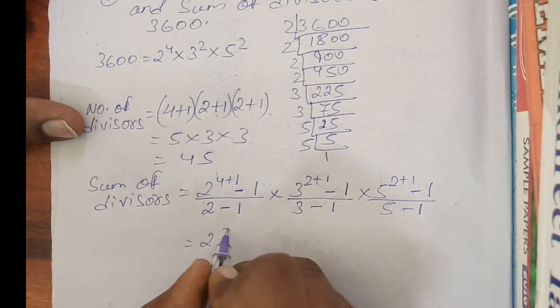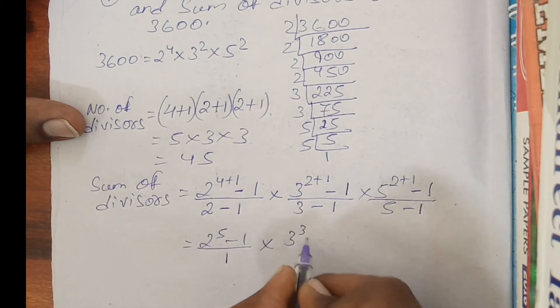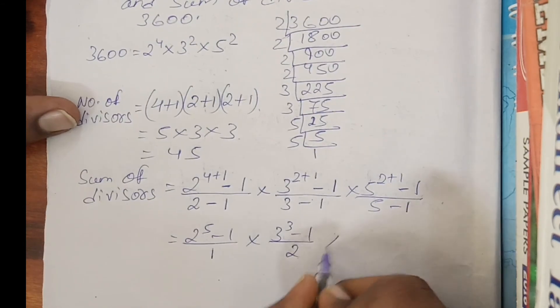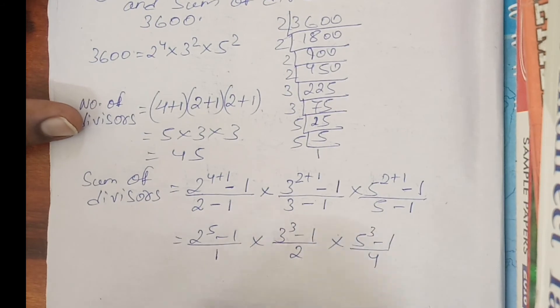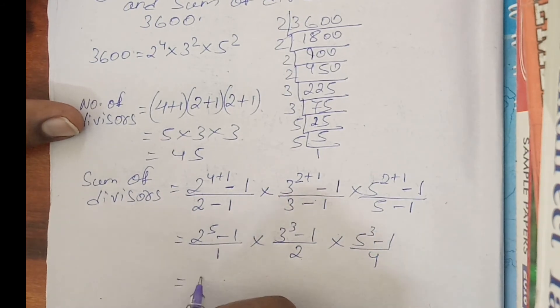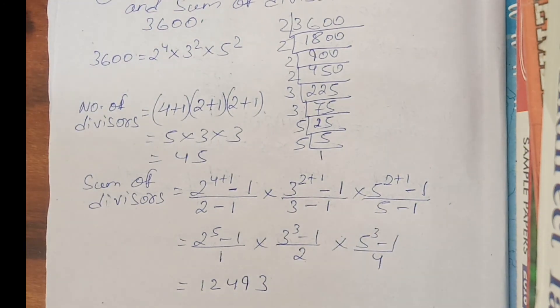Now see, 2 to the power 5 minus 1 by 1, times 3 cube minus 1 by 2, times 5 cube minus 1 by 4. Just calculate it. You will get 12,493. This is the sum of divisors.